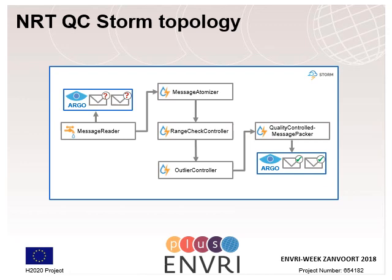Finally, a quality-controlled message packer bolt collects a given number of atomic observations, wraps them into a JSON array, and publishes the array within a quality-control-checked message queue at the Argo messaging service.